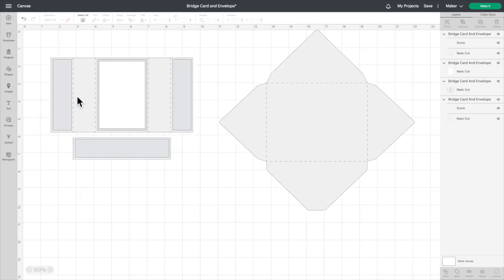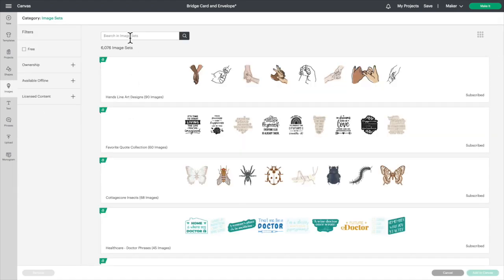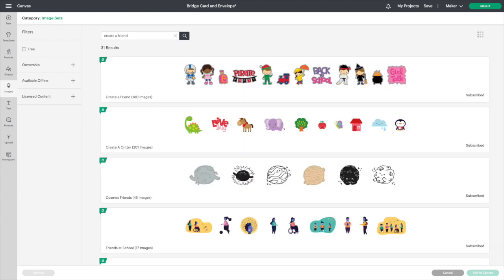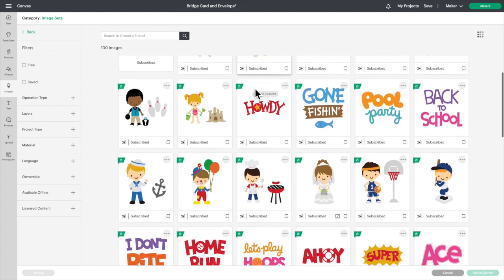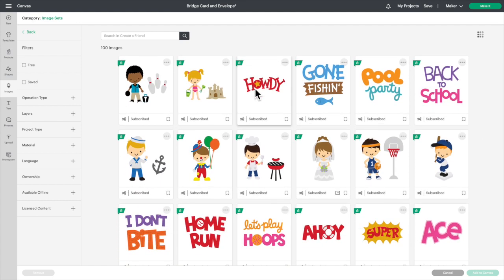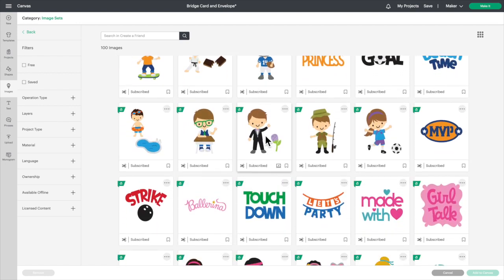First thing we want to do is we'll go into images. We're going to go into image sets and you're going to search Create a Friend. Make sure to spell it correctly.